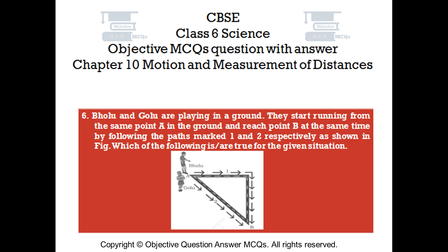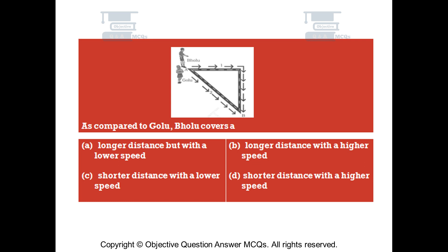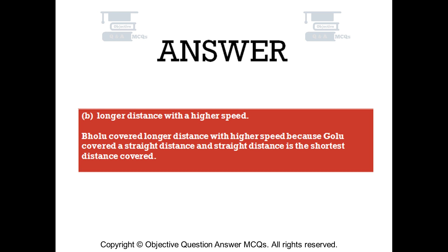Question number 6. Polu and Galu are playing in a ground. They start running from the same point A and reach point B at the same time by following the paths marked 1 and 2 respectively as shown in the figure. Which of the following is/are true? As compared to Galu, Polu covers: Option A, longer distance but with a lower speed; Option B, longer distance with a higher speed; Option C, shorter distance with a lower speed; Option D, shorter distance with a higher speed. The right answer is Option B, longer distance with a higher speed. Polu covered a longer distance with higher speed because Galu covered a straight distance, and a straight distance is the shortest distance covered.